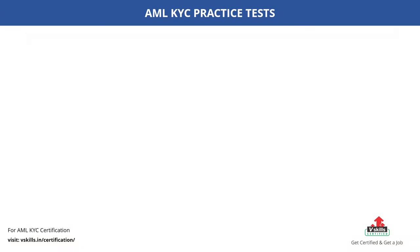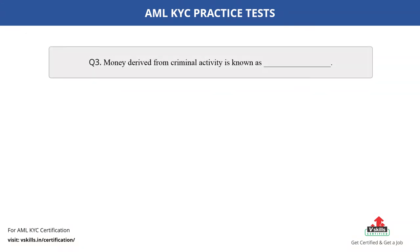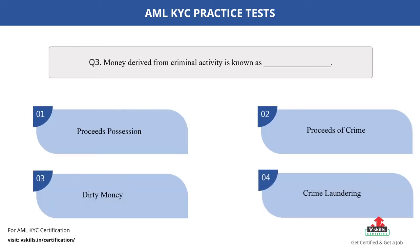Question number 3. What is money derived from criminal activity known as? The options are: A. Proceeds Possession; B. Proceeds of Crime; C. Dirty Money; D. Crime Laundering. The correct answer is option B.